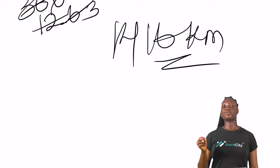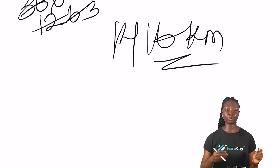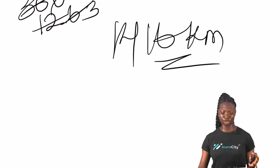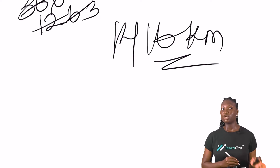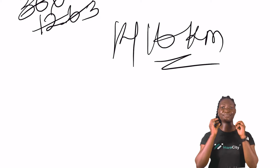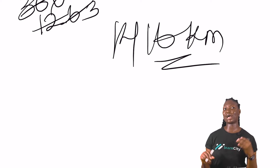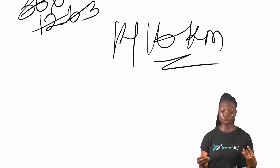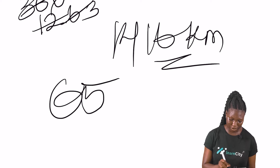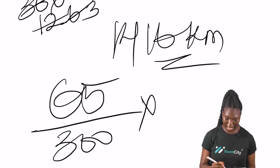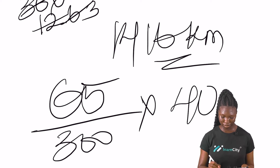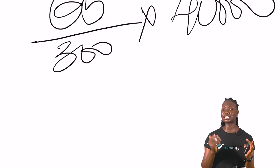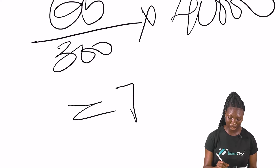Now finding the distance from Q to R along the meridian of longitude. The angular difference between Q at 65°N and R at 0° is 65 degrees. The formula is (65/360) × 2πr, which equals (65/360) × 40000.